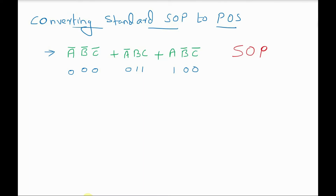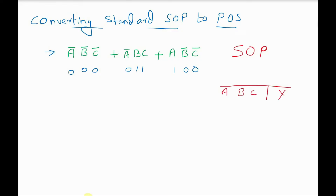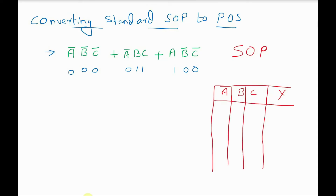To make it clearer, I will draw the truth table. This has columns for A, B, C and output Y. Since A, B, C is a 3-bit combination, I am going to write all the different combinations.